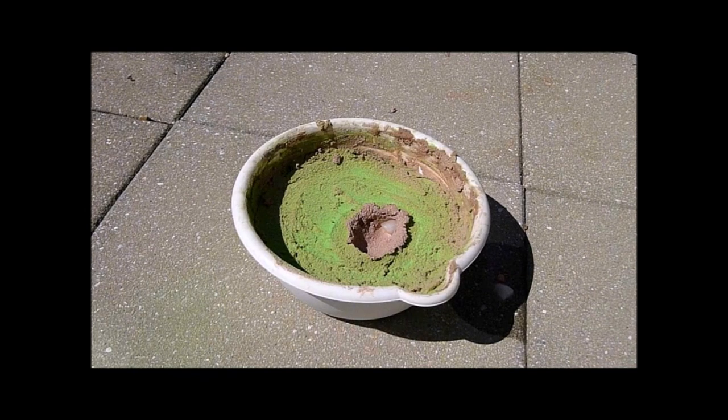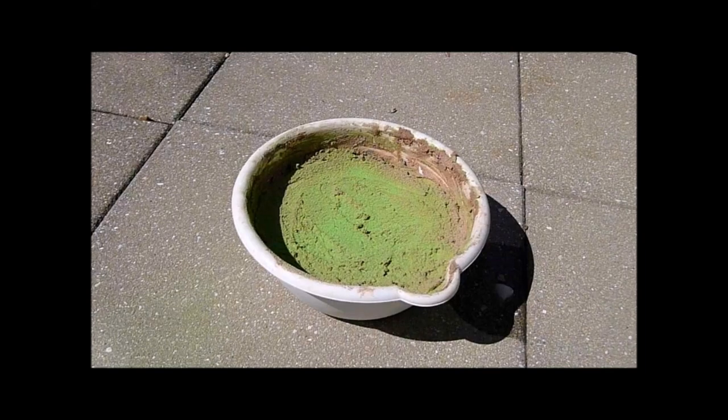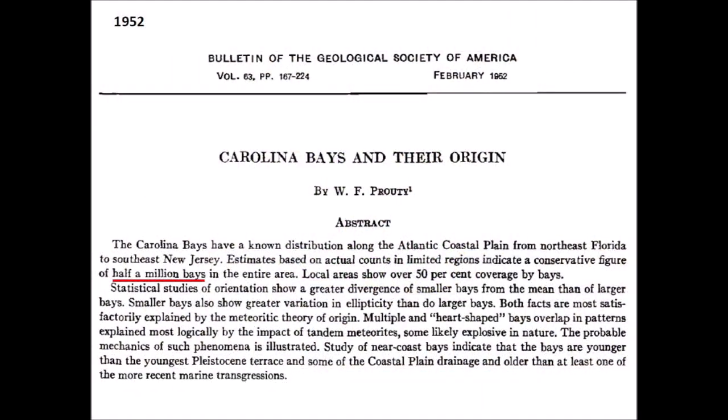Pictures of the experimental impacts contributed to the acceptance of the hypothesis for publication in the peer-reviewed journal. A detailed study of the Carolina Bays by William Prouty in 1952 estimated that there were half a million bays in the Atlantic coastal plain and that the bays covered 50 percent of the surface. This estimate was done from aerial photographs, and Prouty's number of bays was used to calculate the energy of the extraterrestrial impact and the size of the impactor.